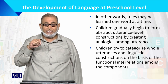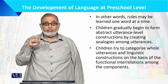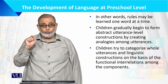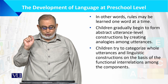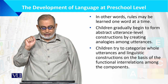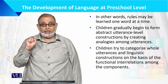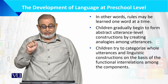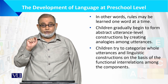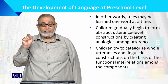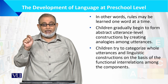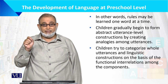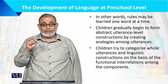This learning process goes from simple to complex, and easy to difficult. In terms of learning, we first learn easy things, then difficult words. Children try to categorize whole utterances, and linguists note they try to categorize constructions on the basis of functional interrelations among the components of different language. Understanding sounds, then phonemes, then words, then syntax, then grammatical semantics — understanding word meanings — this is a gradual process.